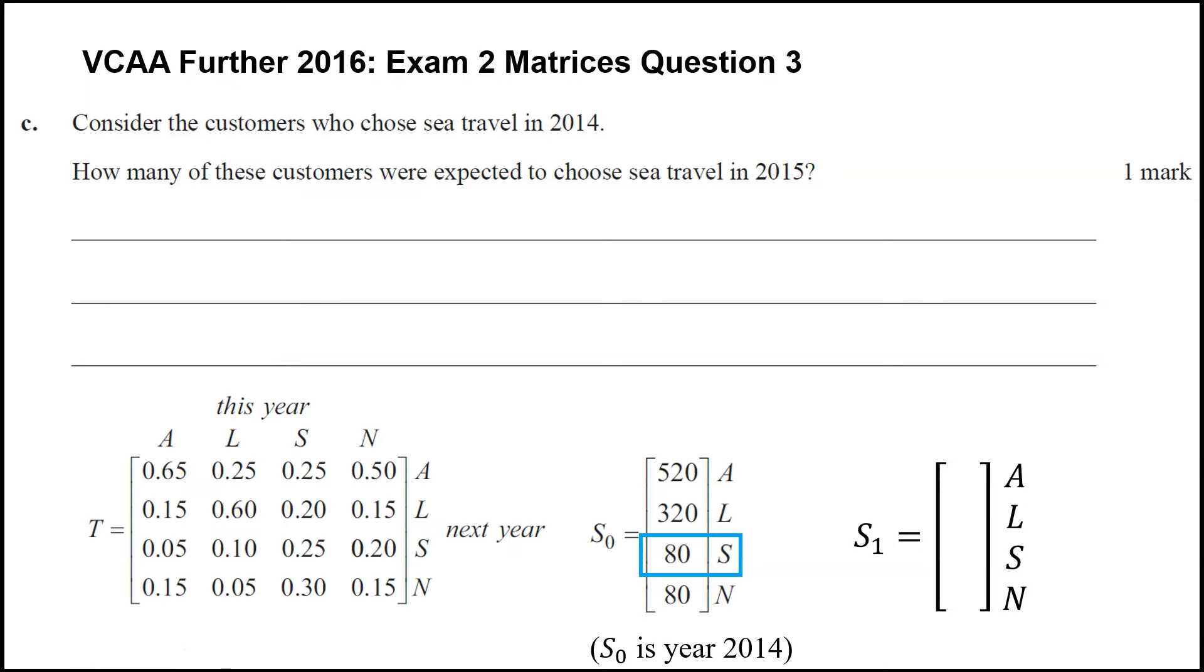Well, where does that C row come from? We take our third row in our transition matrix, and multiply it by the state matrix in order to calculate the people who are doing sea travel in 2015.